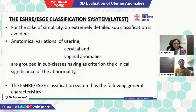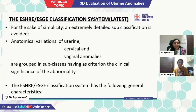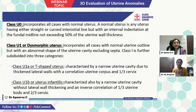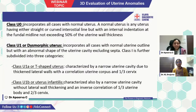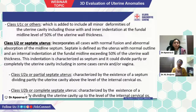The latest classification is the ESHRE/ESGE (S-ray) classification. For the sake of simplicity, extreme detail subclassification is avoided. It is classified based on anatomical variations of uterine, cervical, and vaginal anomalies grouped into subclasses based on clinical significance. Class U0 incorporates all cases with normal uterine shape but abnormal shape of uterine cavity, excluding septa. It is divided into class U1A or T-shaped uterus, class U1B or uterus infantilis, and class U1C or others. Class U2 is the septate uterus.